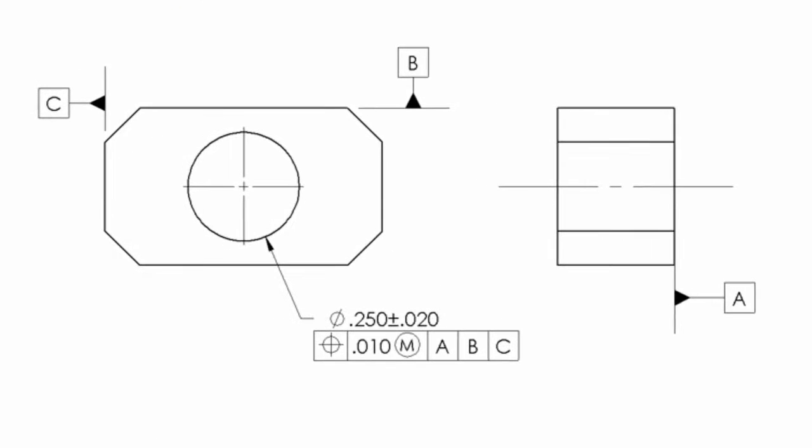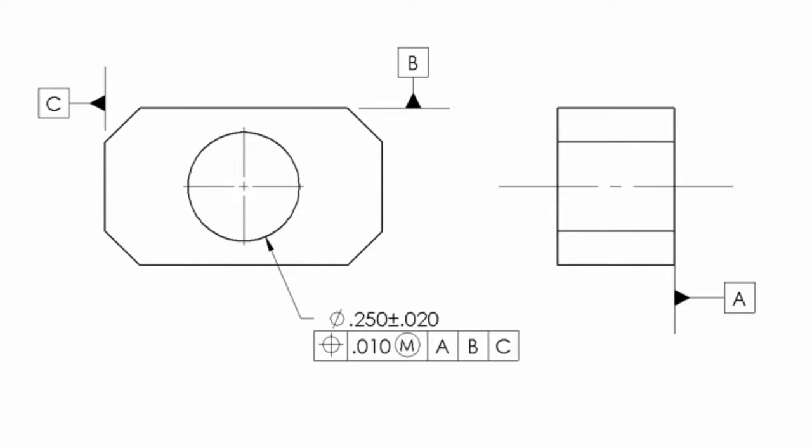Let's start with the max material condition of an internal feature. Here we have the same part that we had in our first video on envelopes, however now we've added the max material condition modifier.